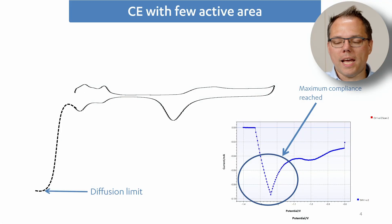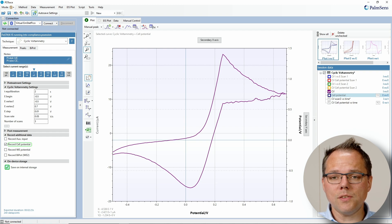Okay, maybe this is a bit abstract. Let's have a quick look at PS trace at a measurement that I did where I ran into the compliance voltage. Okay, so this is my measurement. This is a CV with a suspicious sharp peak here and then some zigzaggy curves.